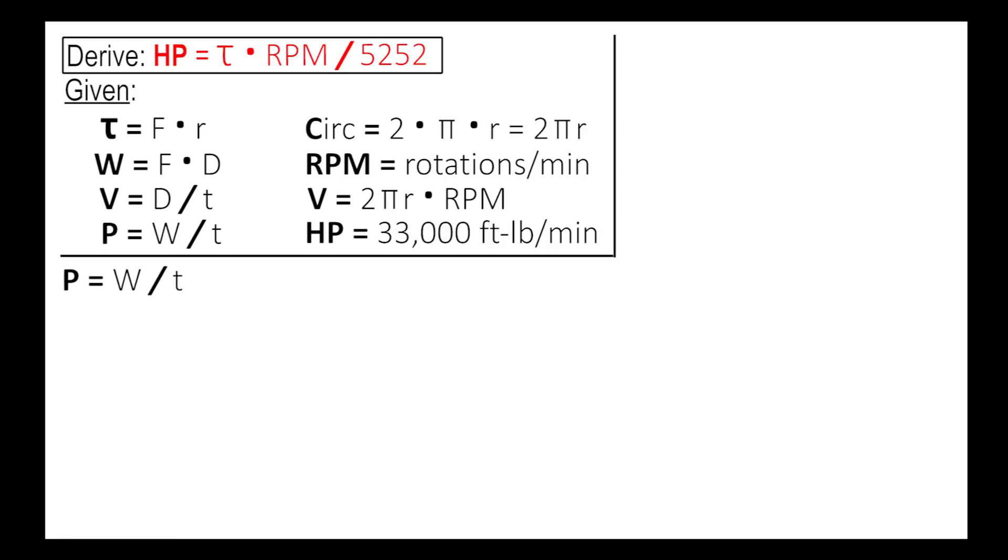Starting with our power equation of power equals work over time. We know that work is just force times distance and that'd be over time. So we know velocity is distance over time. So we can get to power equals force times velocity. Alright, so now with power equals force times velocity, we can start substituting the force and the velocity and keep moving on.